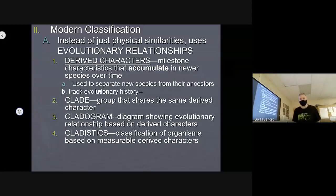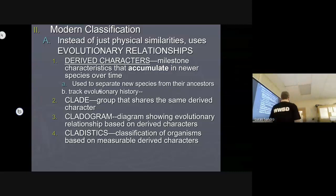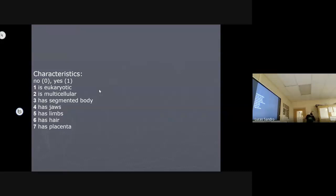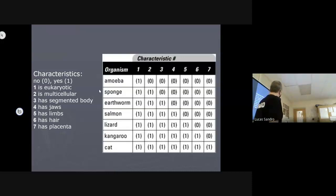So here's an example of some information you might get that doesn't make a whole lot of sense until you make a picture of it. Here's a list, don't write these down, but here's a list of derived characters: being eukaryotic, that's something that shows up and then sticks around, like being multicellular, having a segmented body, having jaws, limbs, hair, and placenta. All of these are steps along the way to modern mammals.